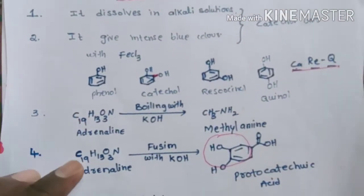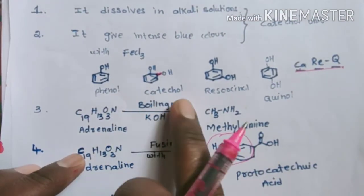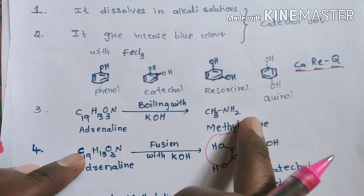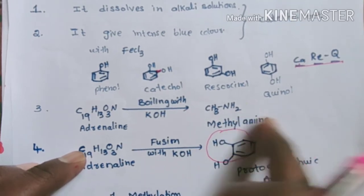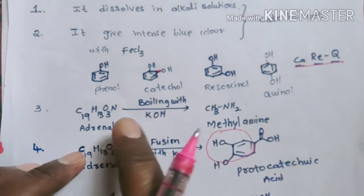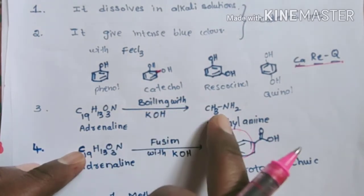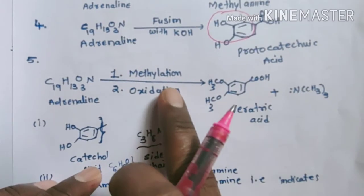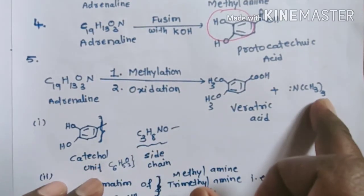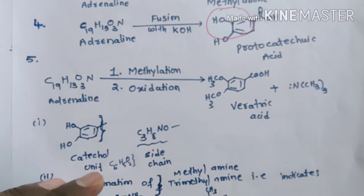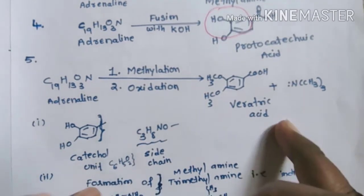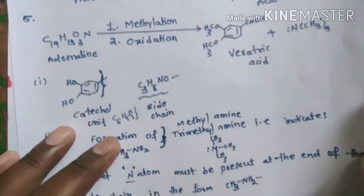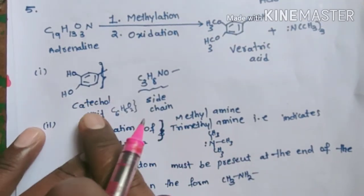When adrenaline is boiled with KOH, we get methylamine as a side product. On boiling with KOH we get methylamine, and on oxidation after methylation we get trimethylamine and we have a catechol group. So adrenaline contains one catechol group.